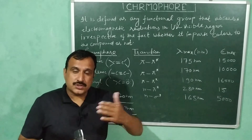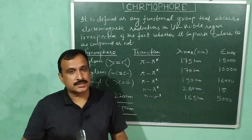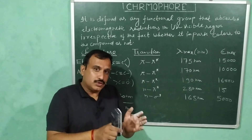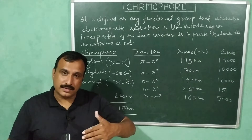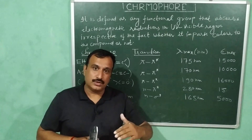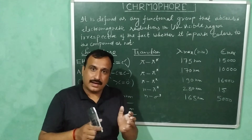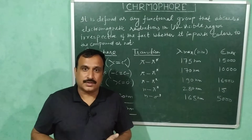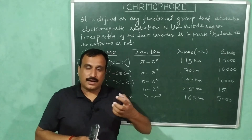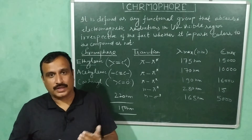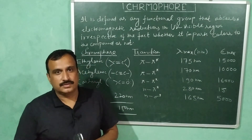Fortunately, it is possible to increase the lambda maximum as well as the molar extinction coefficients by attaching certain groups to the basic chromophores, replacing the hydrogen atoms present on them. This allows us to study those compounds well within the range of commercially available spectrophotometers. These groups are called auxochromes, and I will discuss this concept in my next video. Keep watching my videos, like, share, and subscribe to my channel. Thank you very much.